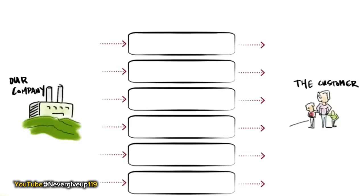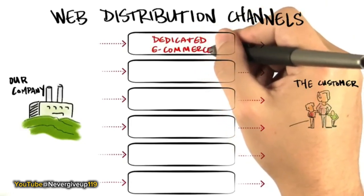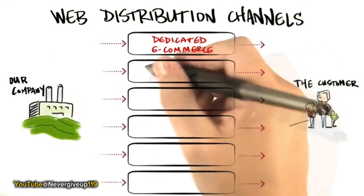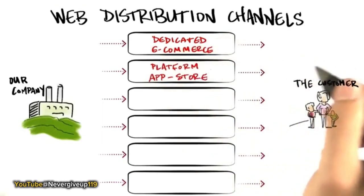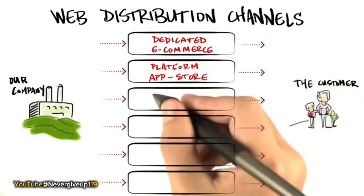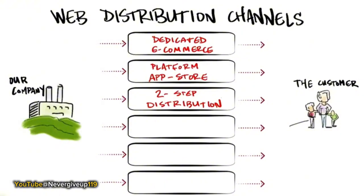Virtual channels include not only the web but also iPhone apps and the cloud. The first choice might be dedicated e-commerce — a website that belongs to you. Another choice is an app on a mobile device; platforms like Android, Apple, and Microsoft require you to use their App Store. Another choice is two-step distribution, where other distributors with major web presences — Amazon, Walmart, other local and regional stores — carry your product. You might also sell your virtual product through VARs or physical channels.